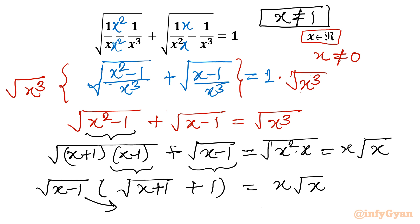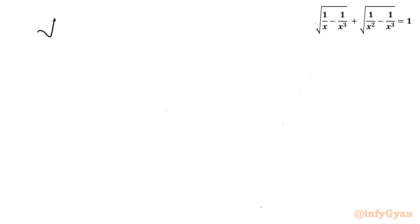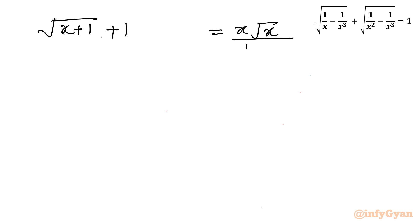So I will write: square root of (x + 1) plus 1 equals x root x divided by square root of (x − 1). I have left some space here because I am going to consider rationalization.